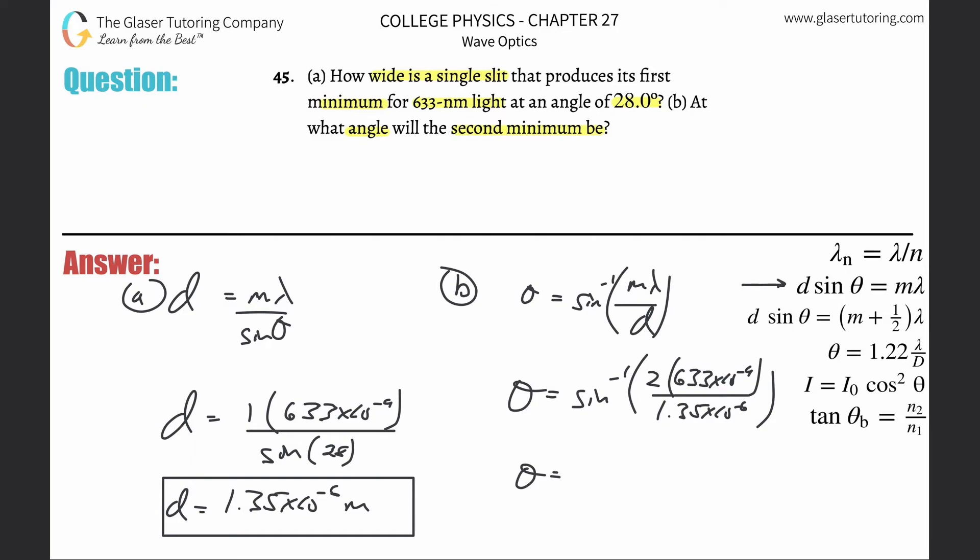So inverse sine now of 2 times 633 times 10 to the minus 9th divided by 1.35 times, well, actually, let's go back and grab the exact answer. Okay, good. And we get a value then of about 69.9 degrees. And there you go.